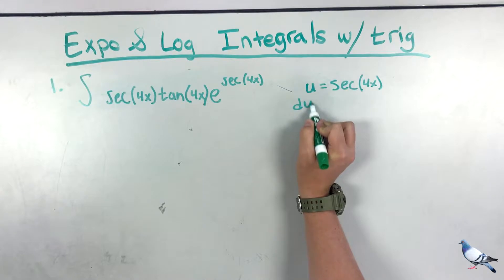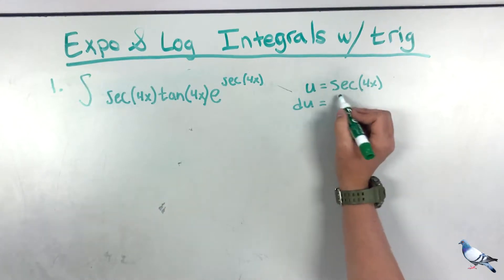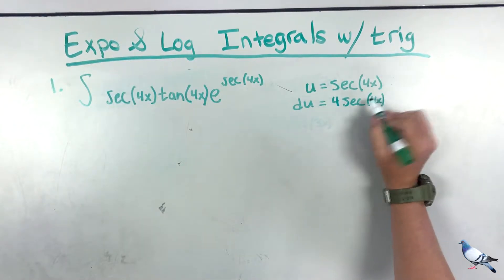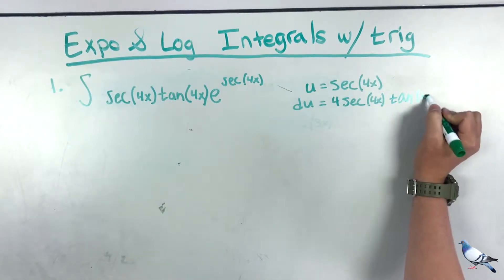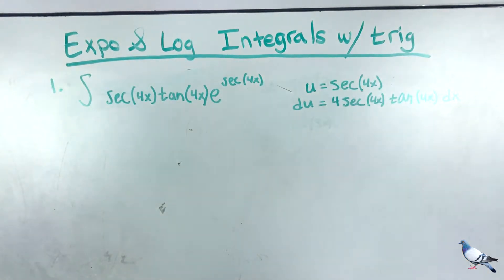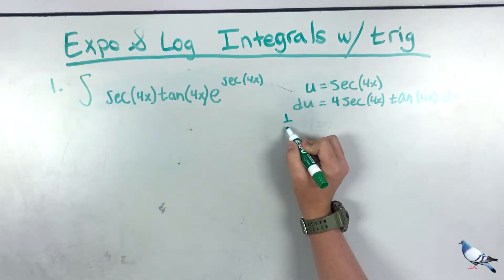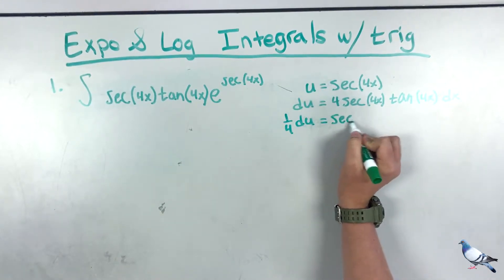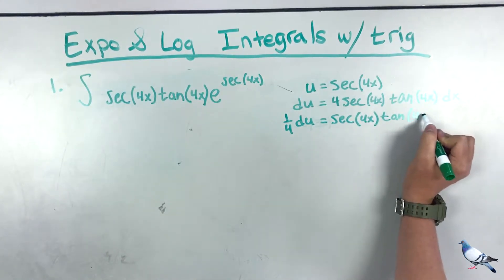Now we're going to find du. Taking the derivative of the inside times the outside, it should be 4·secant(4x)·tangent(4x) dx. We don't have a 4 out front in the original, so we divide by 4 and move it to the other side: 1/4 du = secant(4x)·tangent(4x) dx.